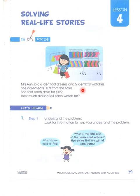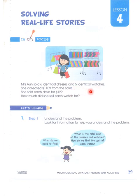We have six dresses and five watches. We know the price of one dress is $129. If we multiply six by 129, we get the total cost of the dresses. Once we get the total cost of the dresses, we subtract it from $1,109. Whatever remains will be the cost of the watches. We then divide it by five and get the cost of one watch.